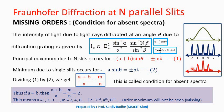This is called missing order. To find the condition for absent spectra, we can write the condition for principal maximum, which is (A + B)sinθ = ±mλ due to n number of slits. And the condition for minimum due to single slit is A sinθ = ±nλ.